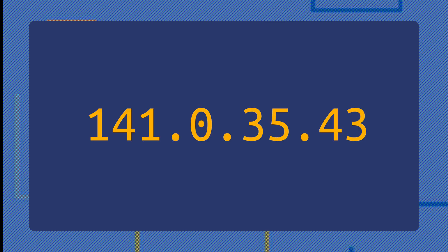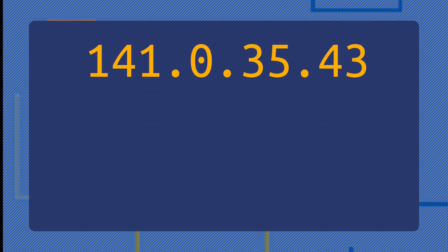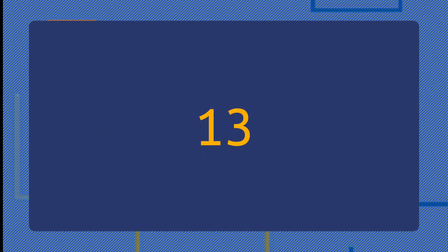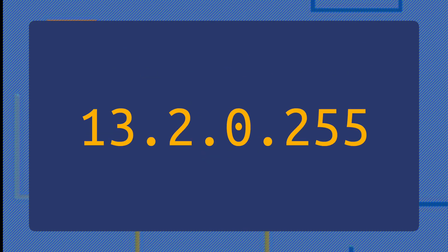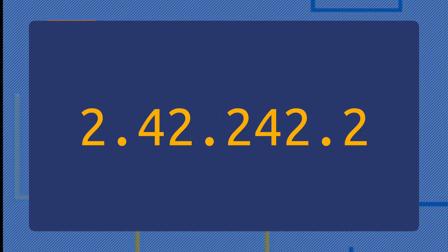This is an IP address. I know, super exciting. IP addresses are 32-bit values typically expressed in a dot-decimal notation, which means you get four individual values ranging from 0 to 255 separated by dots. That makes this an IP address, and also this an IP address.